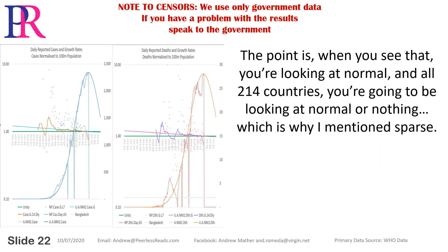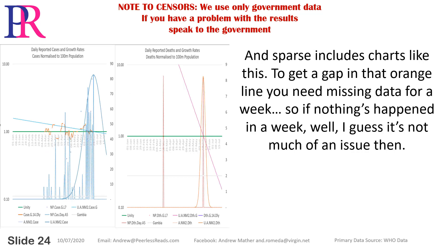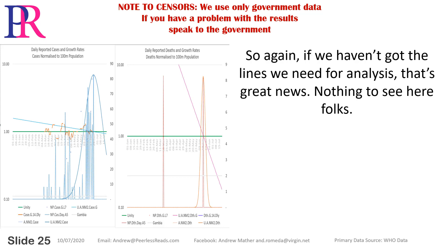When you see that, you're looking at normal, and for all 214 countries you're going to be looking at normal or nothing — which is why I mentioned sparse. It's kind of difficult to do much analysis with this sucker. But if that's their entire experience of COVID, why do we want to analyse? They're free, so sparse is excellent news. Another non-crisis country to contrast with our own. And sparse includes charts like this: to get a gap in that orange line, you need missing data for a week. So if nothing's happening for a week, I guess it's not much of an issue. So again, if we haven't got the lines we need for analysis, that's great news. Nothing to see here, folks.